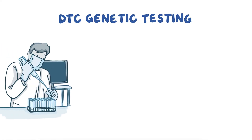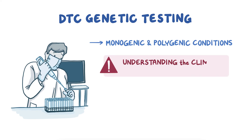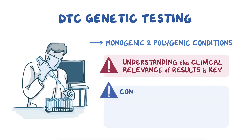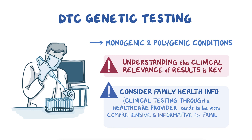DTC genetic tests can include results pertaining to both monogenic and polygenic conditions. Understanding the clinical relevance of each type of result is key because they are not equal in their implications for disease risk. It's also important to consider family health information in the context of DTC genetic testing. Although DTC tests can include important monogenic disease variants, clinical testing through a healthcare provider tends to be more comprehensive and therefore more informative for families suspected of having a monogenic disease.